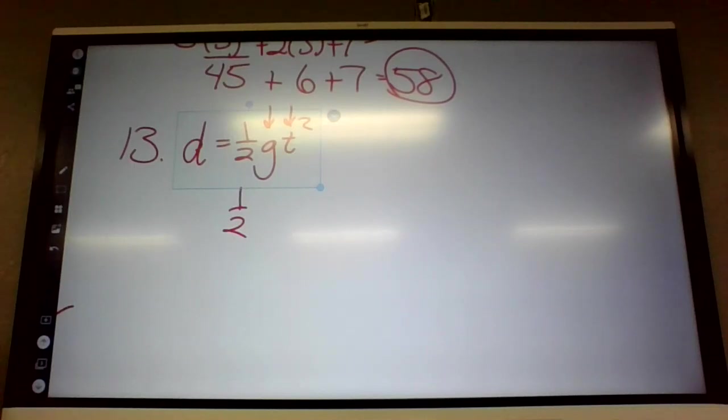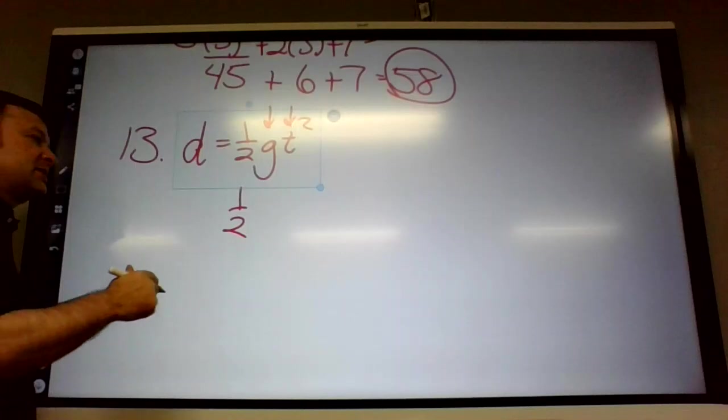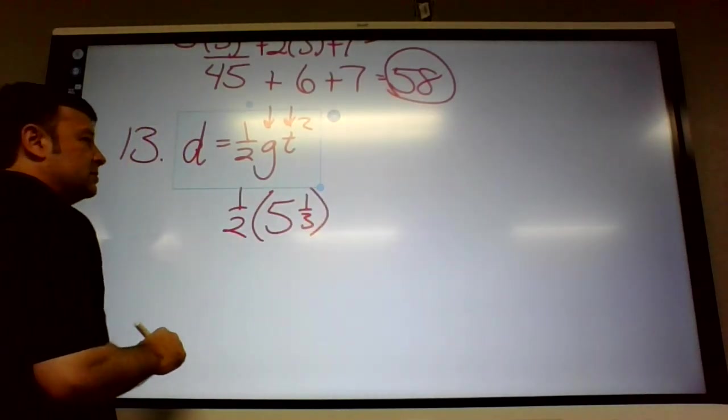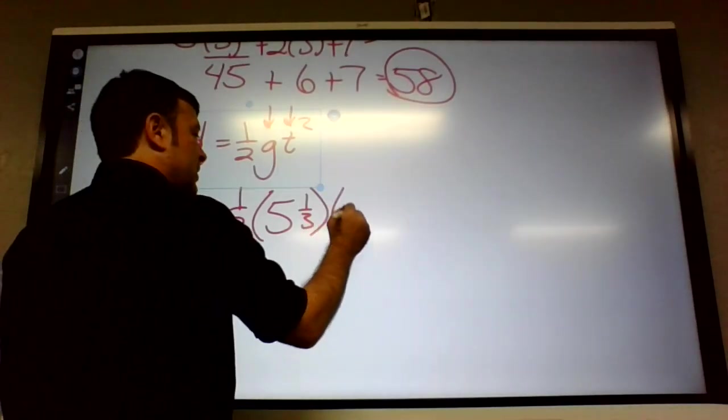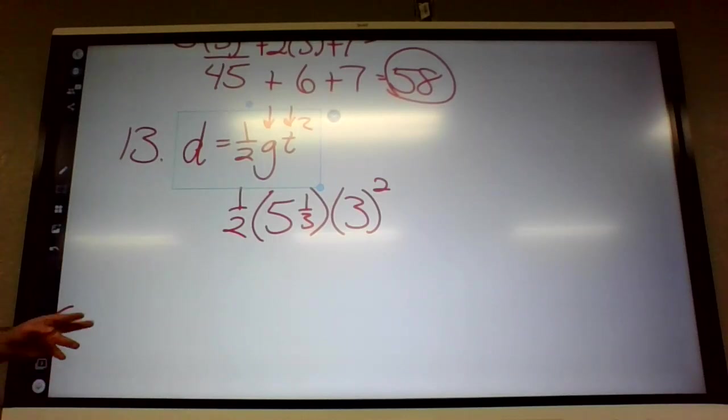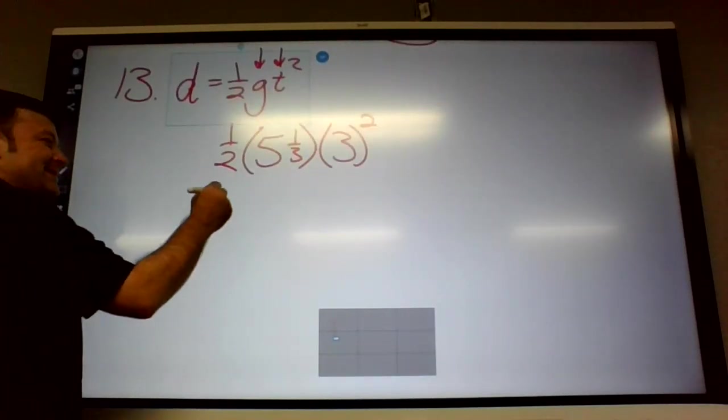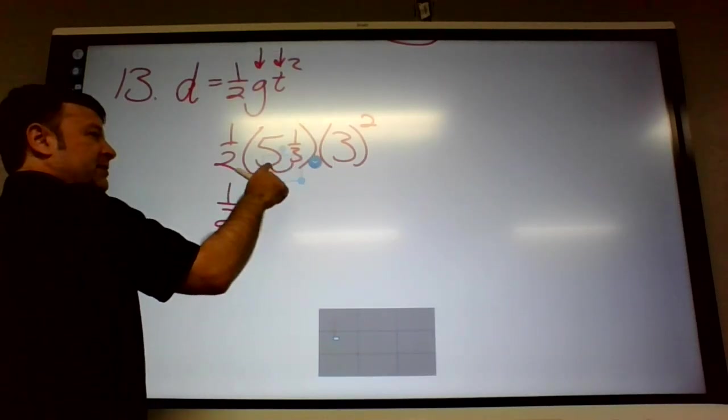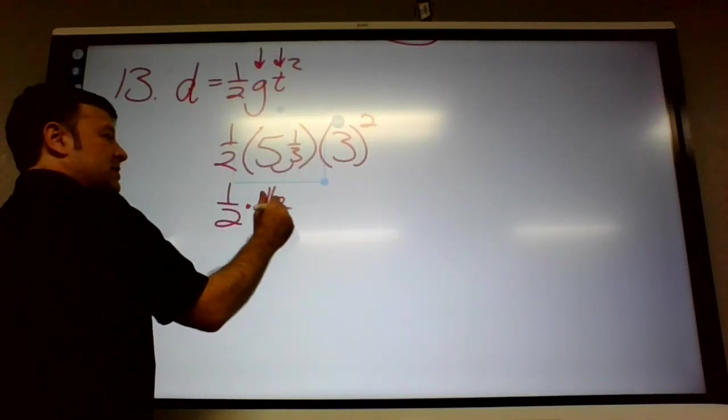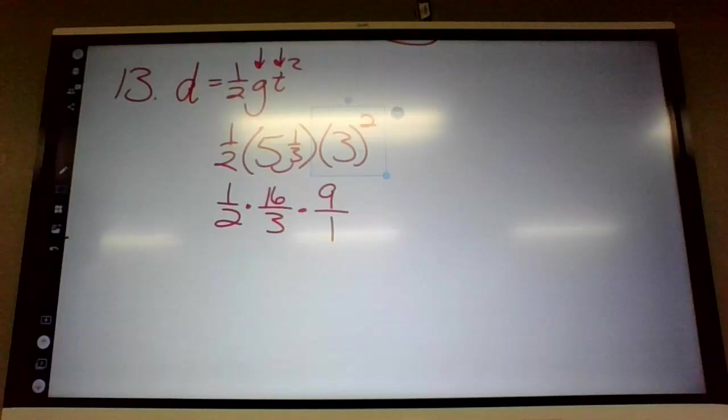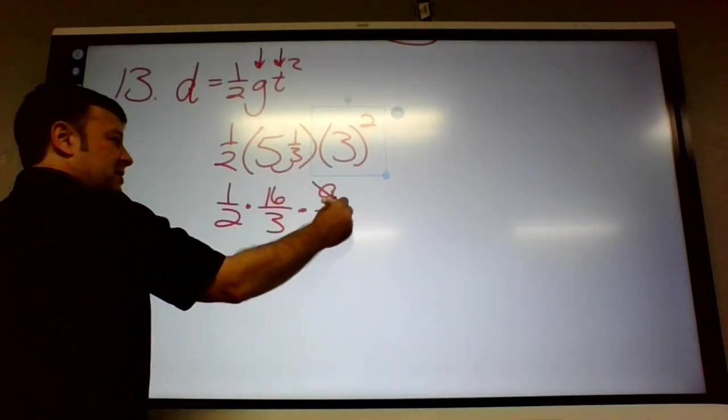And then on the problem, it says on the Moon, g equals five and one-third feet per second. So that's the gravity on the Moon. Five and one-third. The time is three. So that's it. That will do it. Now if I had to do this by hand, which I kind of am, to change this to improper, this would be three times five plus one is sixteen-thirds. And three squared is nine.